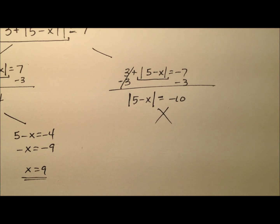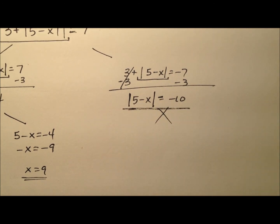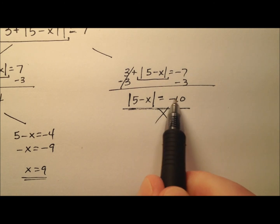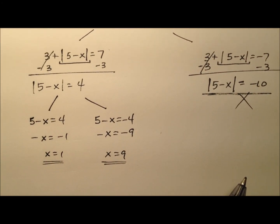So no values here will be usable because this right here has no solution. If it hadn't been negative 10 and if it had been 0 or a positive number, I would have worked this right side exactly like I worked the left side.